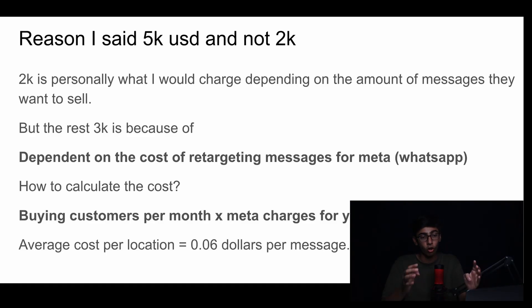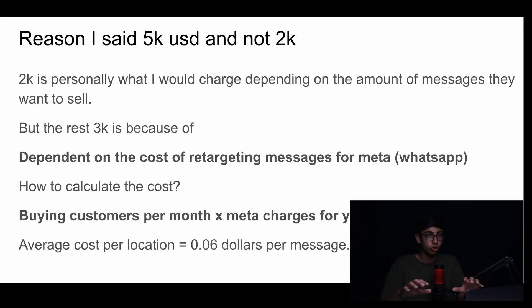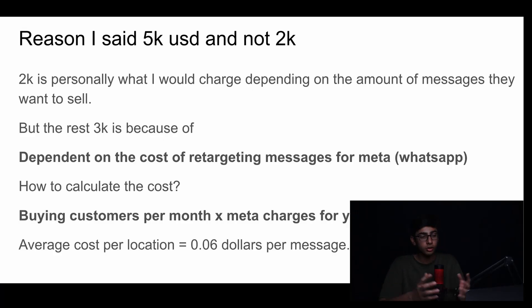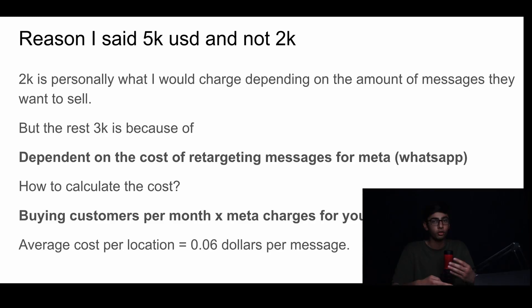What you have to know about this system is that if you want to send out WhatsApp messages, WhatsApp themselves have their own charge for marketing messages, which is what this type of message is. How do you calculate the cost? You would simply take the buying customers per month — $45,000 in our previous example — times the Meta charges for your location. Each location has different Meta charges, but on average the cost per location for a marketing message is $0.06 per message. Keep that in mind while calculating your cost.